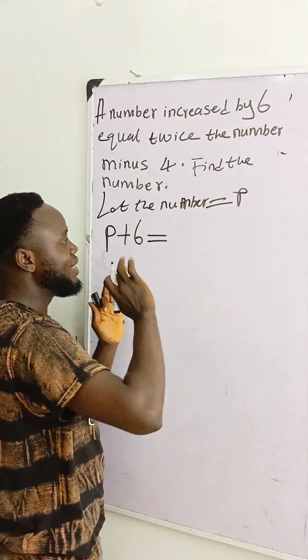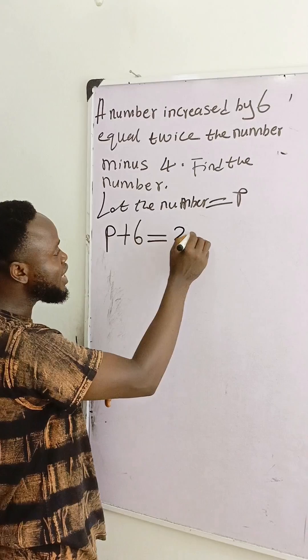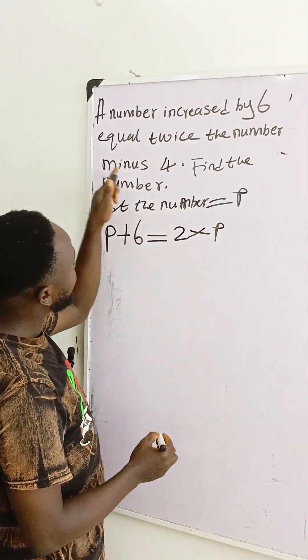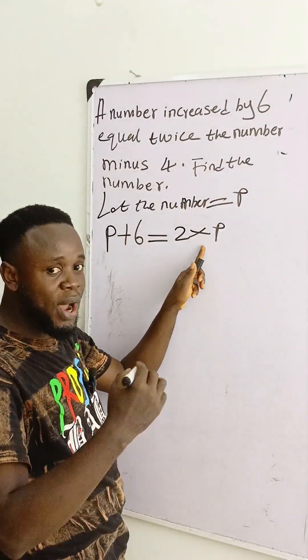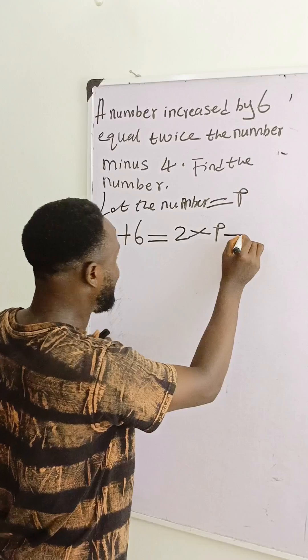six to the number, the answer will be equal to two times the number - which number? P. The number is P minus four equals twice the number. Twice the number means two times the number minus four.